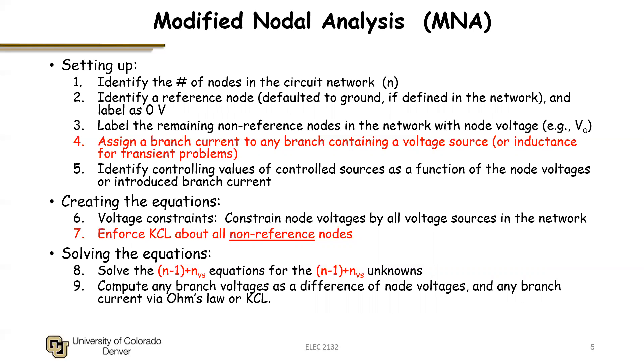Then we would proceed as normal. We identify controlling values of controlled sources as a function of either these new branch currents we introduce or the node voltages. As we set up equations, we do our voltage constraints as per normal. That would not change, these still constrain node voltages. But now, because of introducing these branch currents, I can apply KCL about all non-reference nodes.